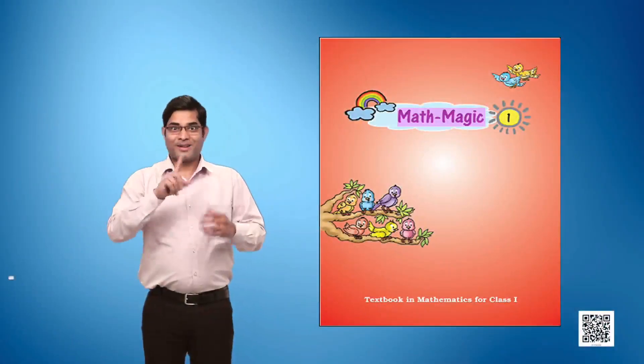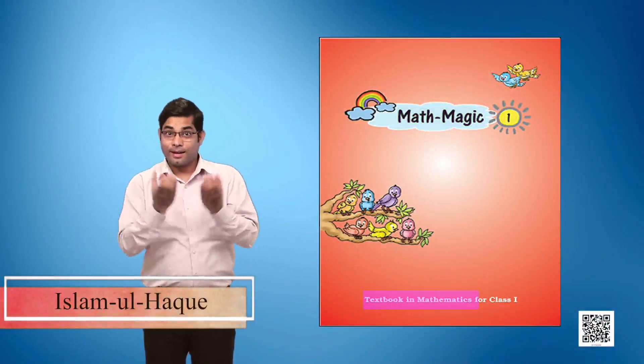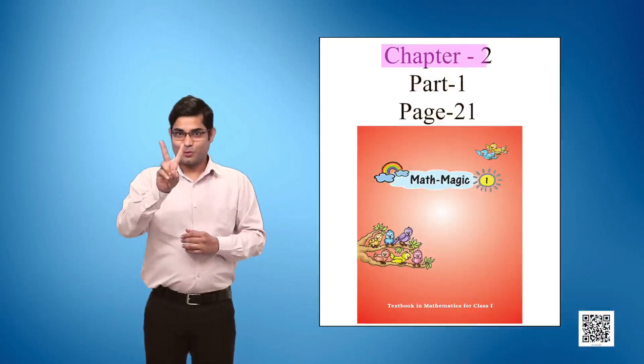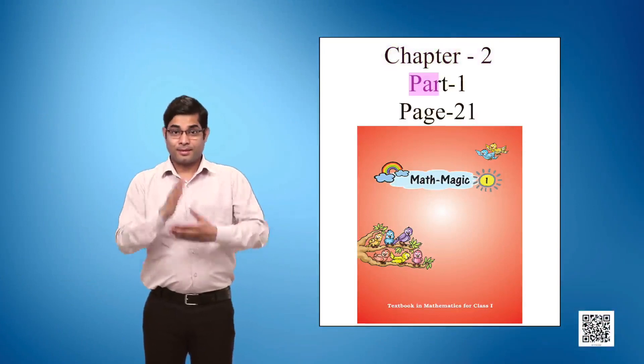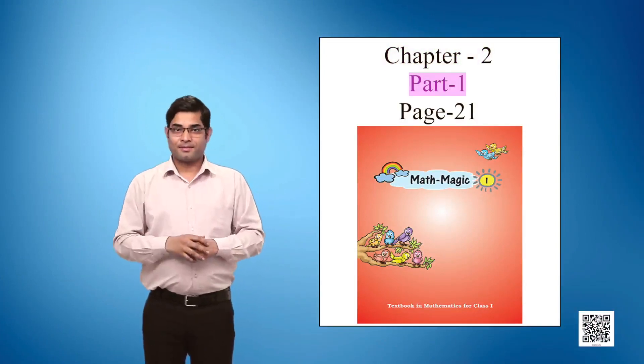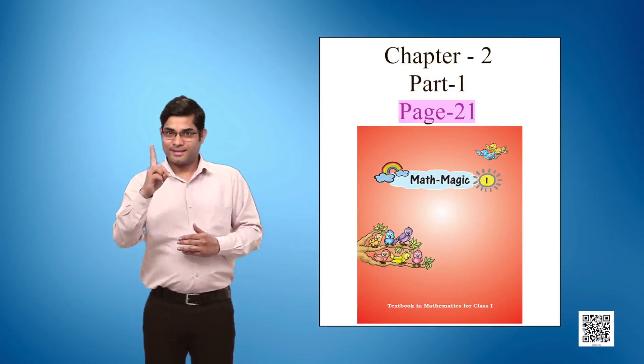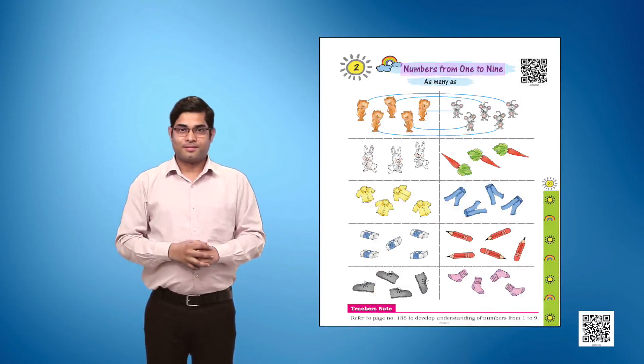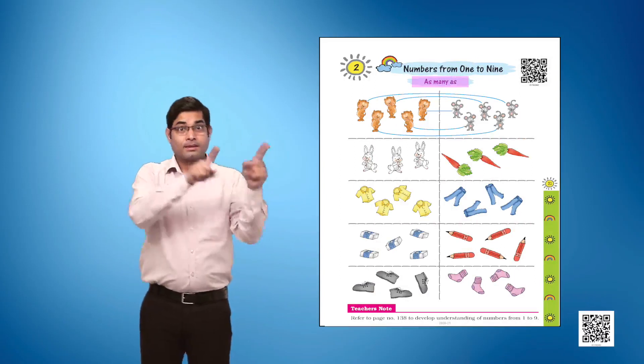Math Magic 1 Textbook in Mathematics for Class 1, Chapter 2, Part 1, Page 21: Numbers from 1 to 9, focusing on the concept of 'as many as.'